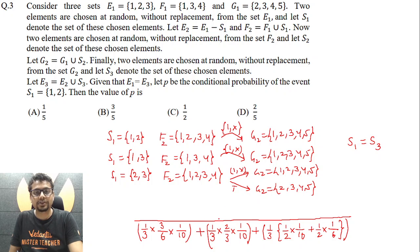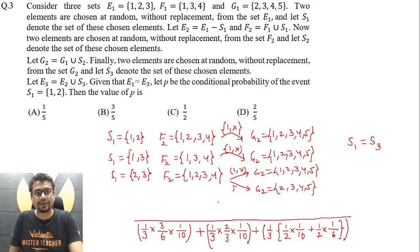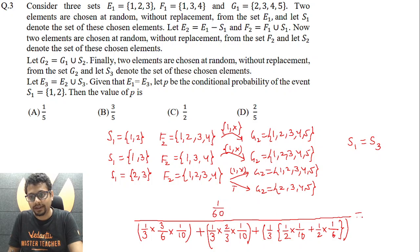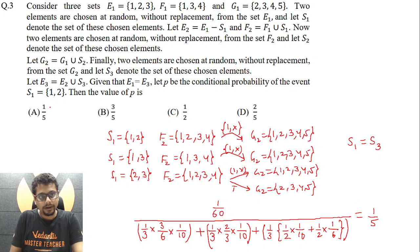We have covered all cases for E1 equal to E3. In the numerator, it is the probability that E1 equals E3 and S1 is {1,2} — that first case expression — which becomes 1/60. In the denominator, evaluating all cases gives 1/5. That's the final answer. Thanks for listening. Stay tuned for the next question.